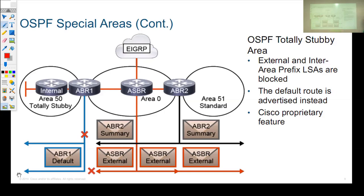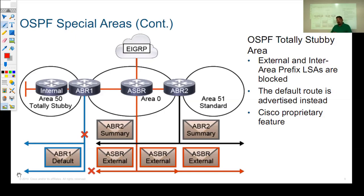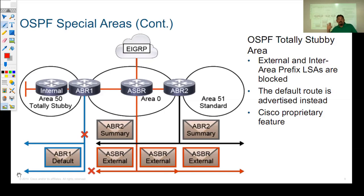Remember that to become neighbors in OSPF, routers have to agree on what type of area it is. So they have what they call the stub area flag — every single router in that area has to understand that it is a stub area.